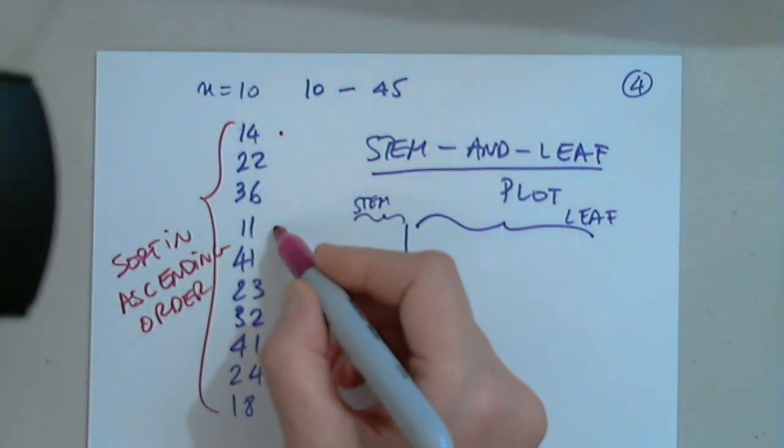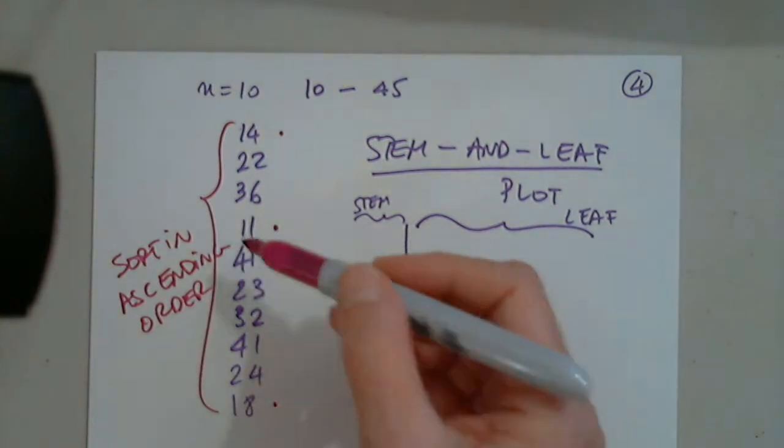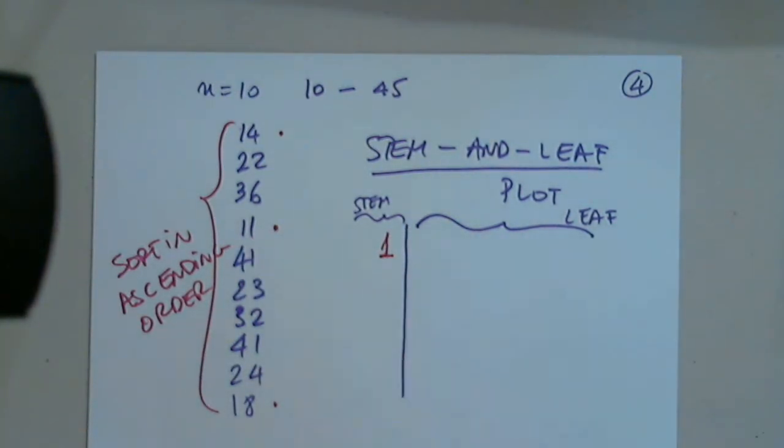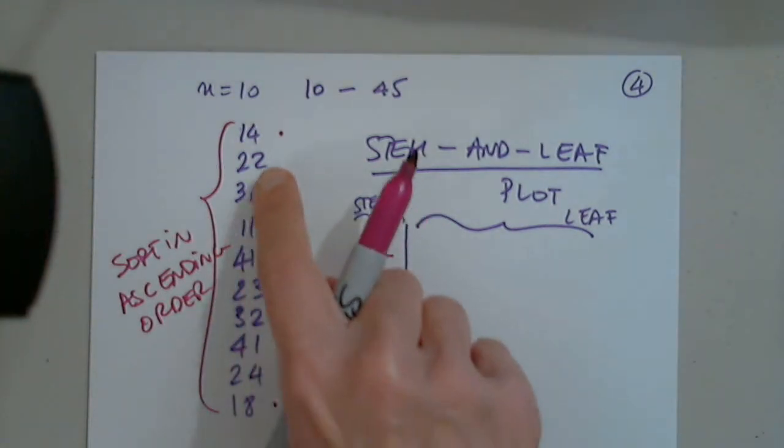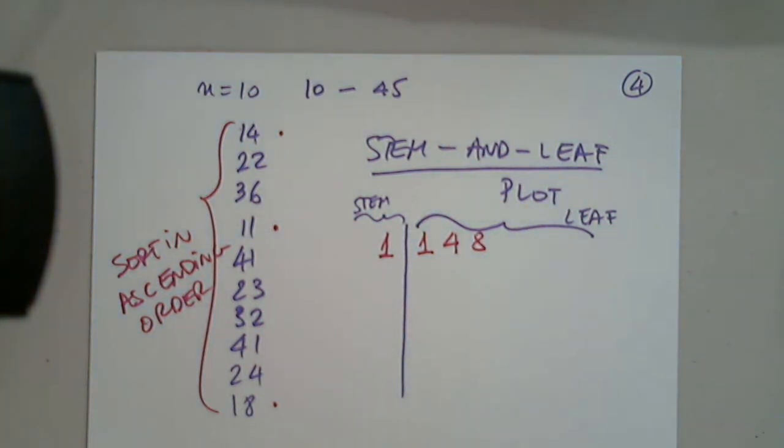So I see the ones with 1 are 3. So I will put a stem of 1. And in order will be 1, 4, and 8. 1, 4, and 8. How do I read this? 11, 14, 18.